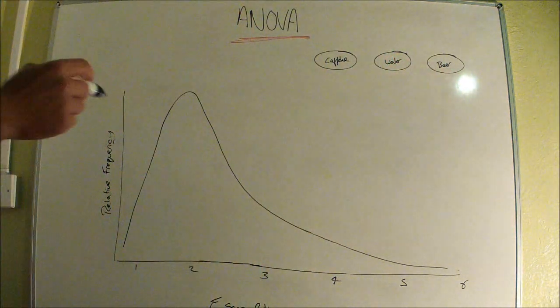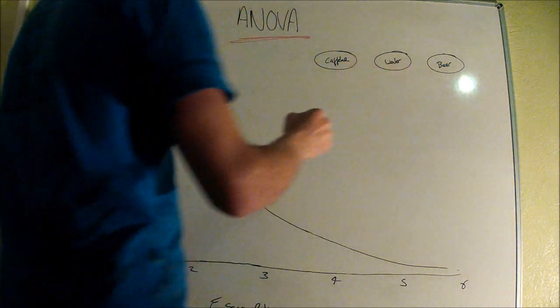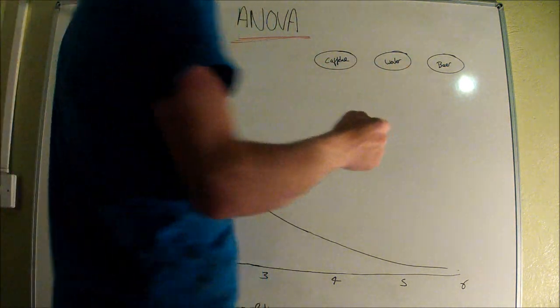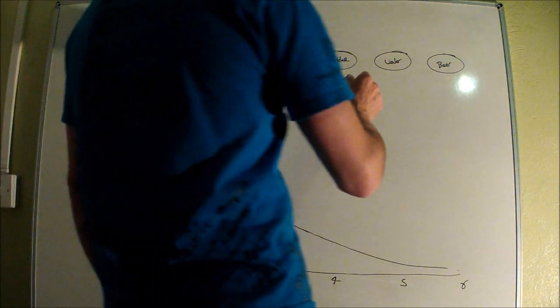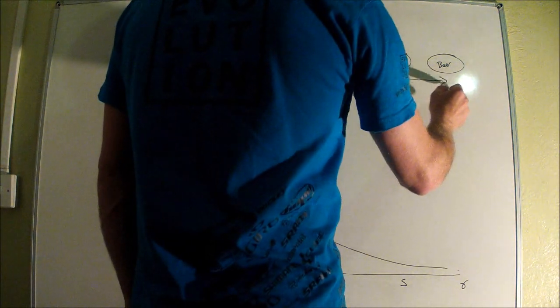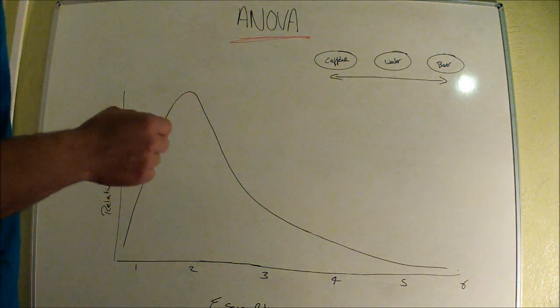What an ANOVA does is it compares the variance between the groups and within the groups to try and disprove or prove the null hypothesis that there will be no difference between these groups in terms of dependent variable scores.